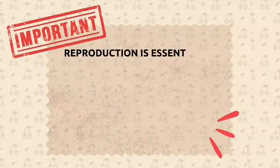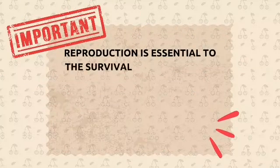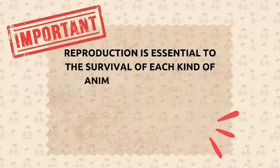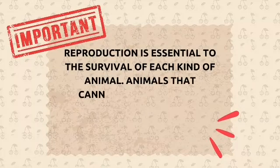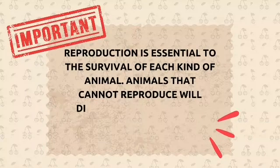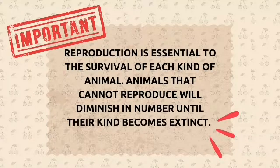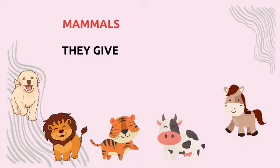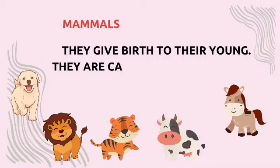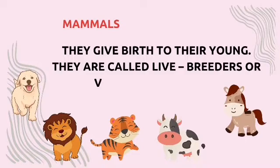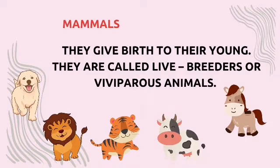Reproduction is essential to the survival of each kind of animal. Animals that cannot reproduce will diminish in number until their kind becomes extinct. Animals such as dog, lion, tiger, cow, and horse are classified as mammals. They give birth to their young. They are called live breeders or viviparous animals.